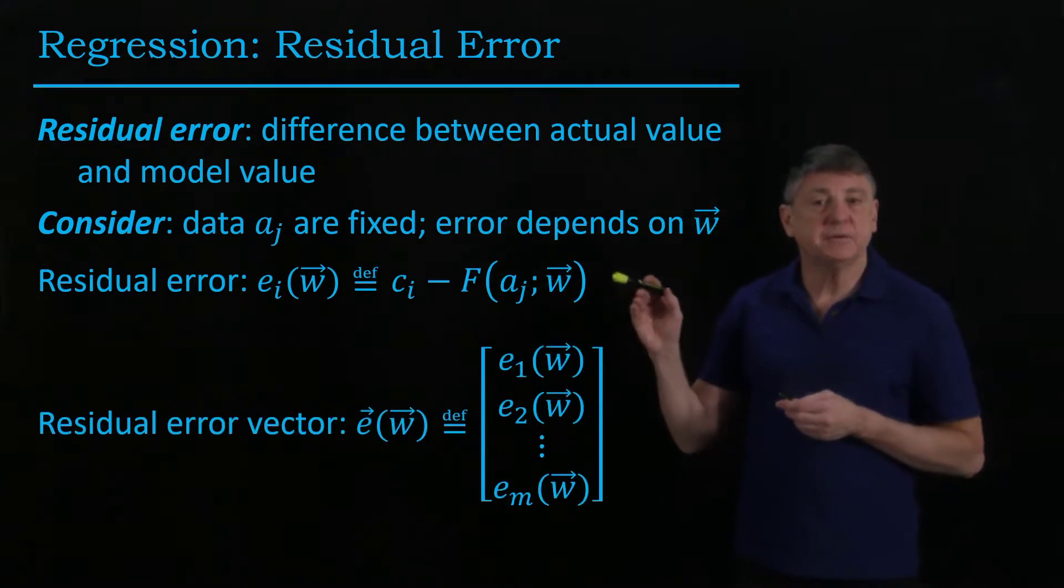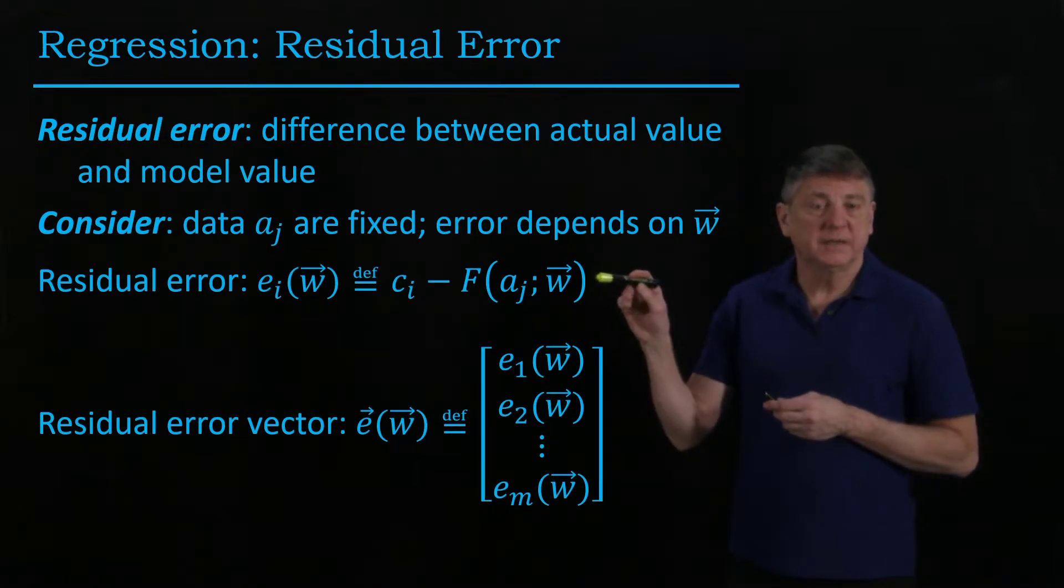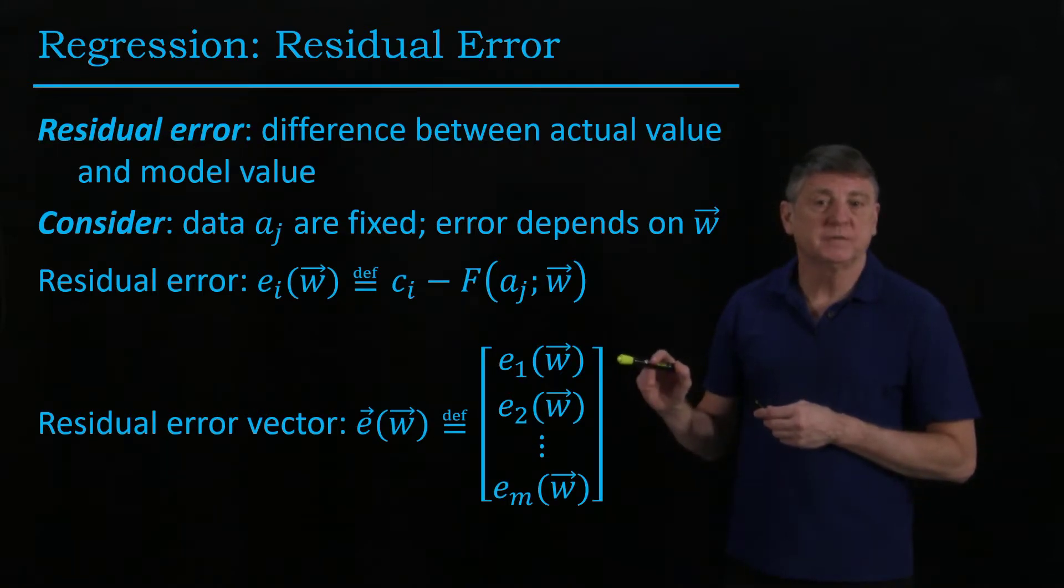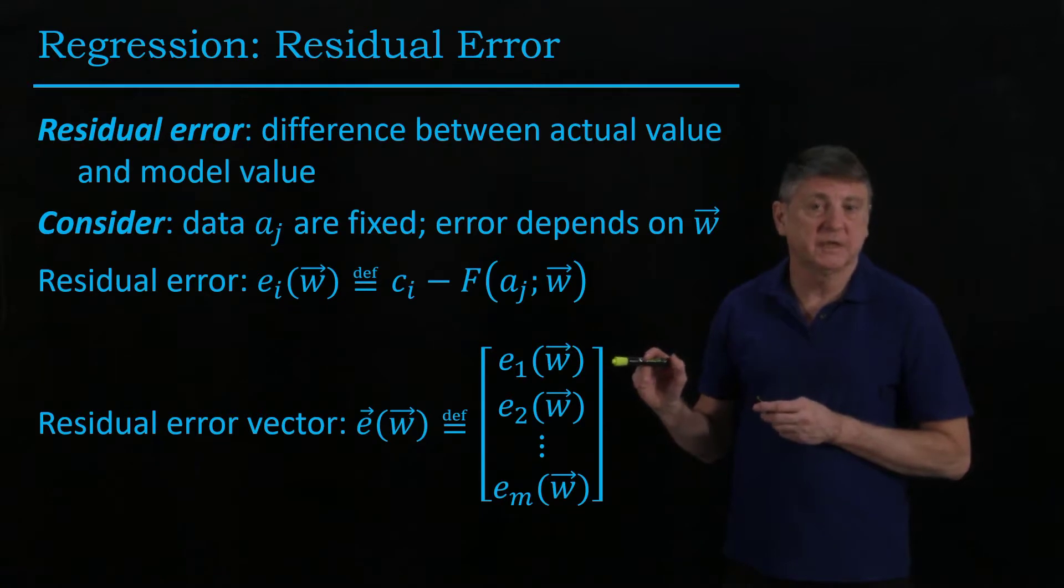So we can then gather each of these individual errors for each observation, and we can gather them into a vector. And let's observe that each one of these is a potentially nonlinear function if we're doing nonlinear regression.